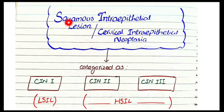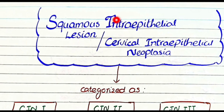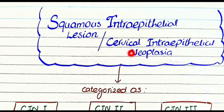In this video we will discuss the histopathology of squamous intraepithelial lesion or cervical intraepithelial neoplasia. Squamous intraepithelial lesion and cervical intraepithelial neoplasia are names for the same thing — cervical precancerous lesions. We have discussed the pathogenesis of these cervical precancerous lesions in the previous video. Now we will focus on the histopathology.